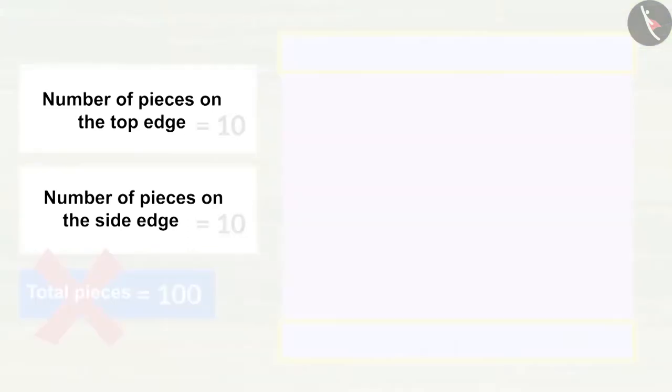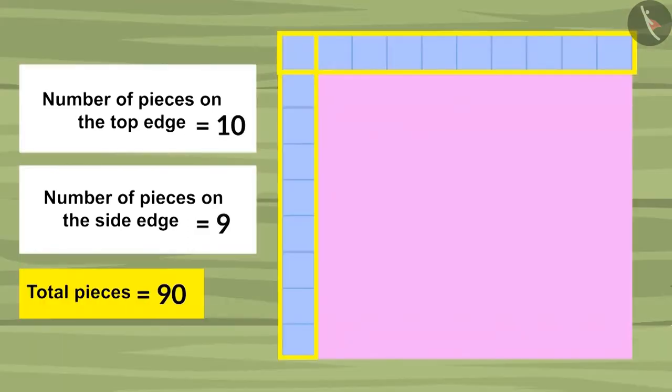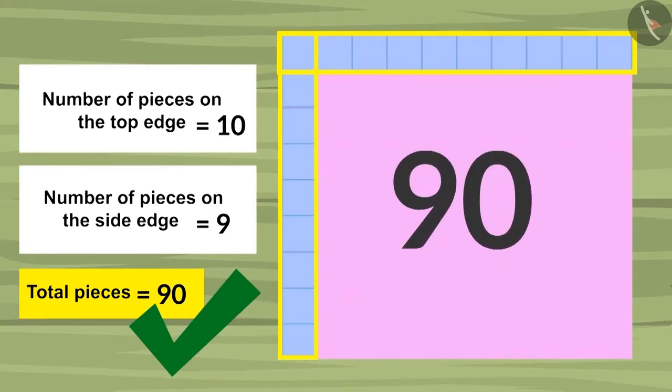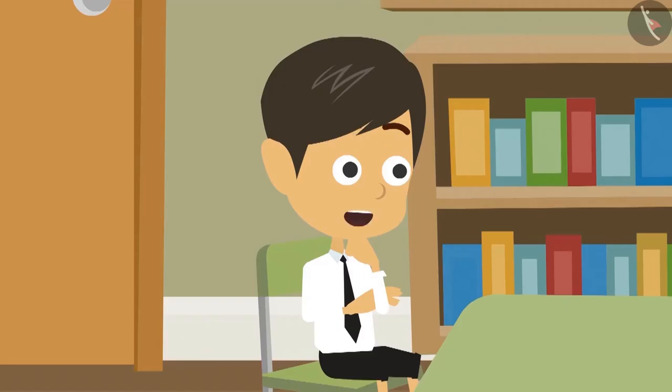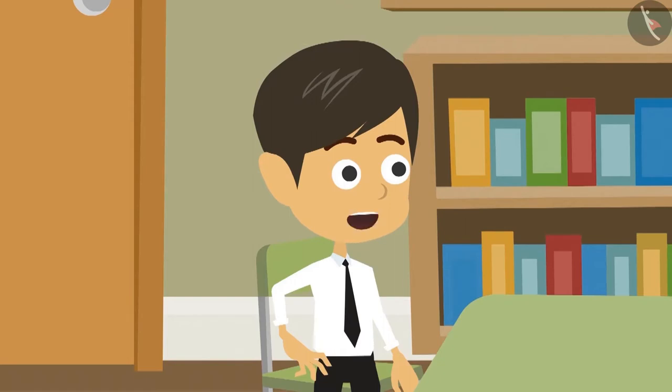Look, it made a difference. First answer was coming to be 100 pieces, now the answer coming 90 pieces, and this is the correct answer. So a total of 90 pieces will be required to cover this paper. Oh, now I get it. This method is much better. With this any shape can be measured with fewer pieces.